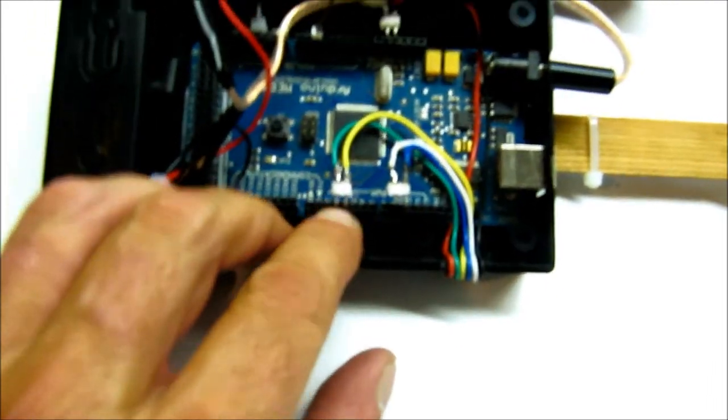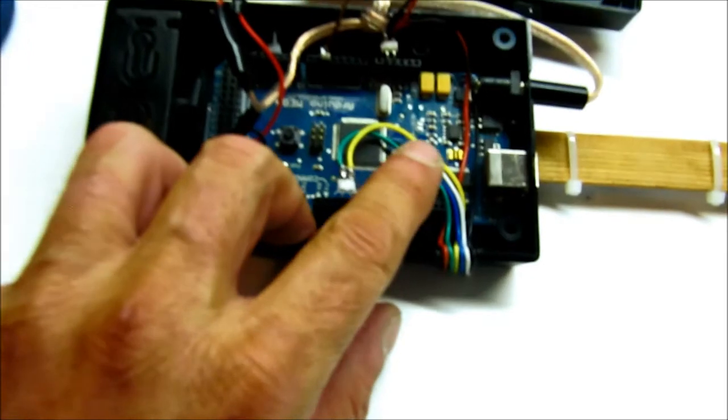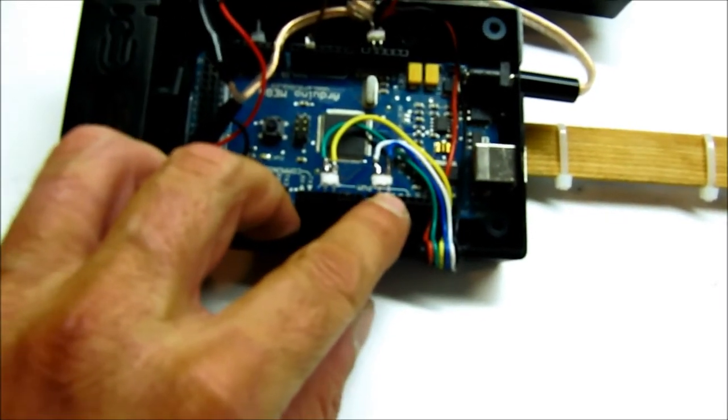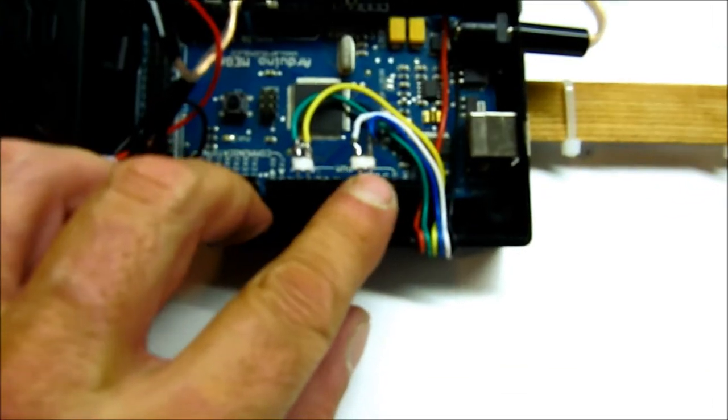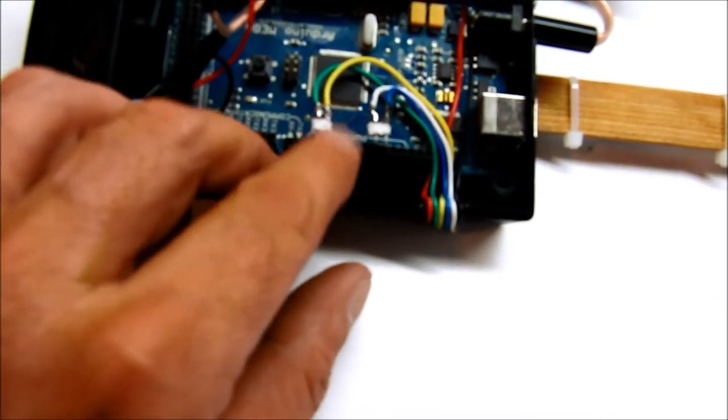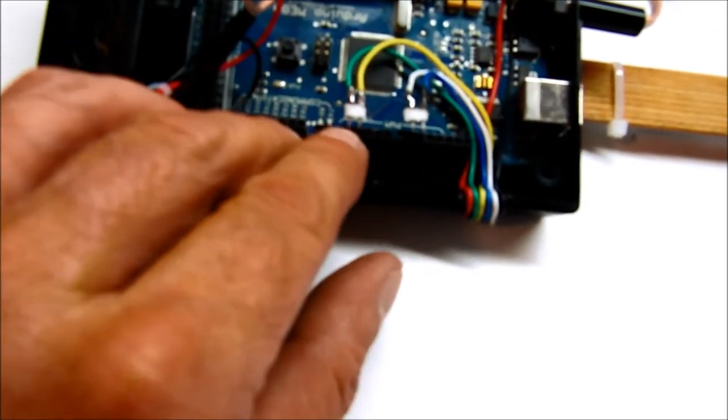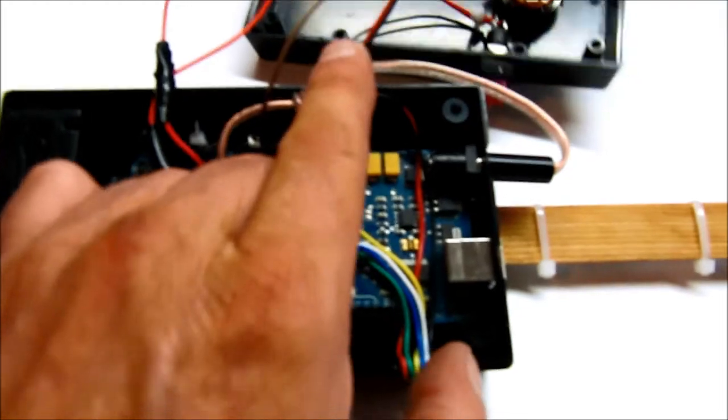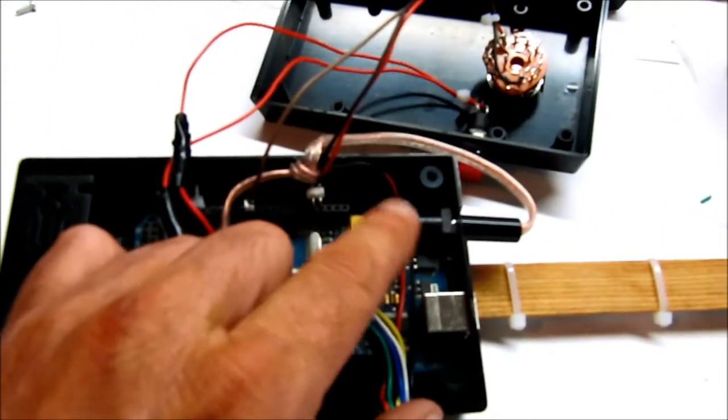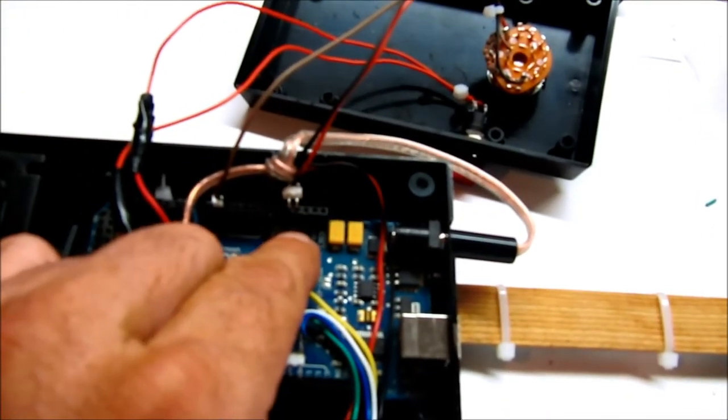So I've got the blue wire connected to pin 10 on the Arduino, white wire connected to pin 9, yellow wire connected to pin 4, green wire connected to pin 3. The red wires from both the strip and the rotary switch are connected to the 5 volt connection on the Arduino.